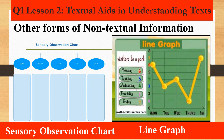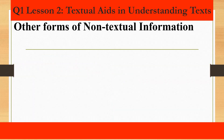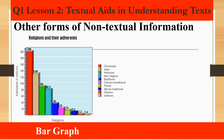Another is the line graph. This is used to track changes over short and long periods of time. Line graphs are better to use than bar graphs when smaller changes exist. The bar graph is used to compare things between different groups or to track changes over time, and is best to use when trying to measure larger changes over time.